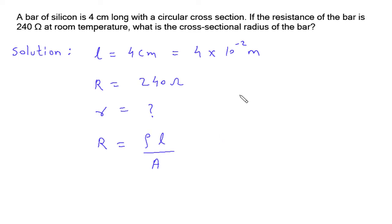The resistivity of silicon is rho equals 6.4 times 10 to the power of 2 Ohm meter. The formula for area is A equals pi r squared.